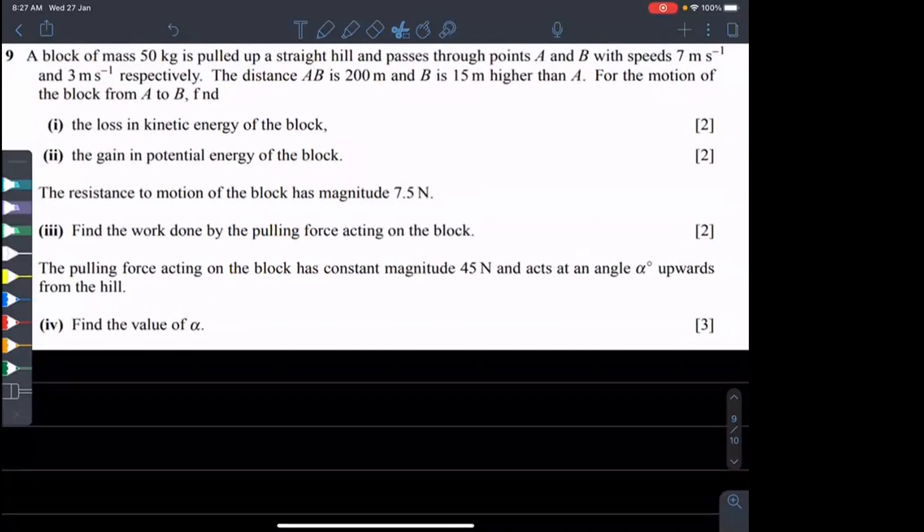A block of mass 50 kg is pulled up a straight hill and passes through points A and B with speeds 7 and 3 meters per second respectively. The distance AB is 200 meters and B is 15 meters higher than A. For the motion from A to B, find the loss in kinetic energy of the body and the gain in potential energy of the block.